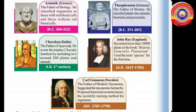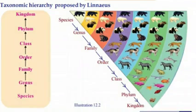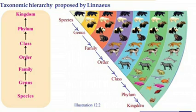Next, Carl Linnaeus — he is known as the father of modern taxonomy. He suggested the taxonomic hierarchy and proposed binomial nomenclature, the scientific naming method. All organisms including human beings are placed in different levels of classification, known as taxonomic hierarchy. The hierarchy proposed by Carl Linnaeus, from base to top, is: species, genus, family, order, class, phylum, and kingdom.